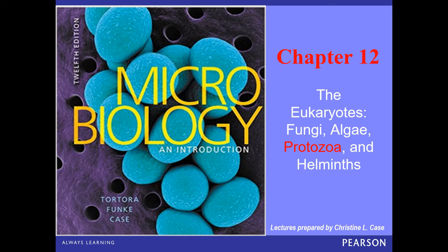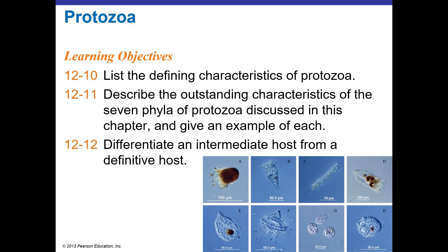Continuing our survey of the eukaryotic pathogens, Chapter 12, Part C is devoted to the protozoa. When we talk about the protozoa, these are going to be differentiated by often the forms that are going to inhabit a host. We'll talk about some of the characteristics of the various phyla and look at what are the defining features.